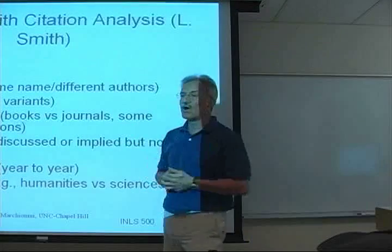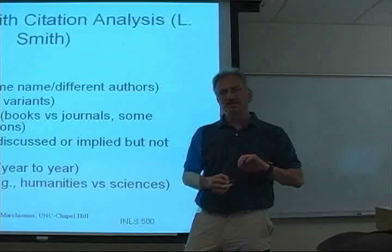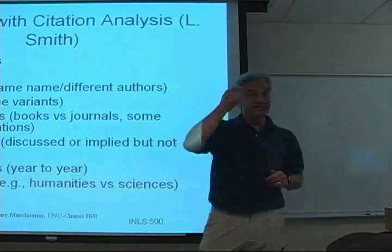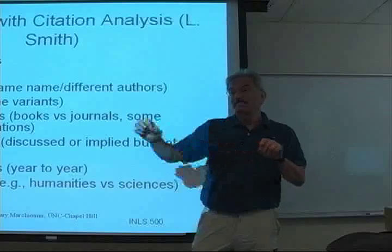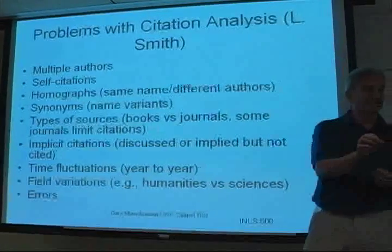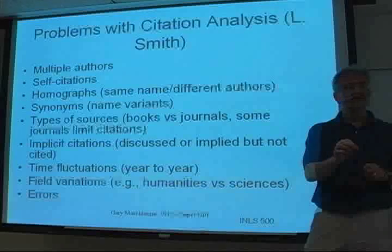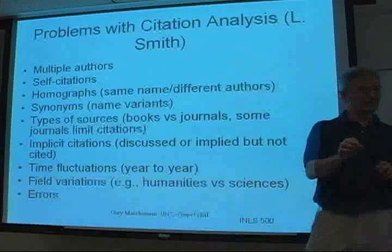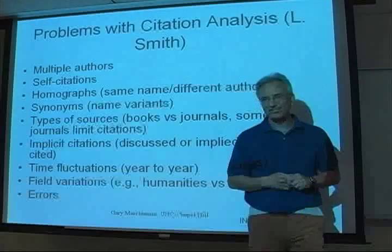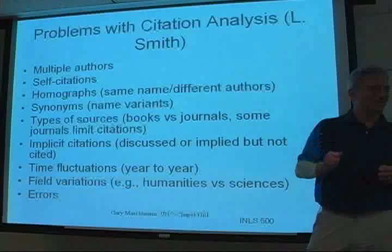Here are some of the problems with just counting the number of citations. You can have multiple authors — in the early days if there were like 10 authors, usually only the first one got counted. That's pretty much been taken care of in the days of electronic records, where if you're going to get one, you can just as easily get the rest, assuming you can parse the punctuation between author names.